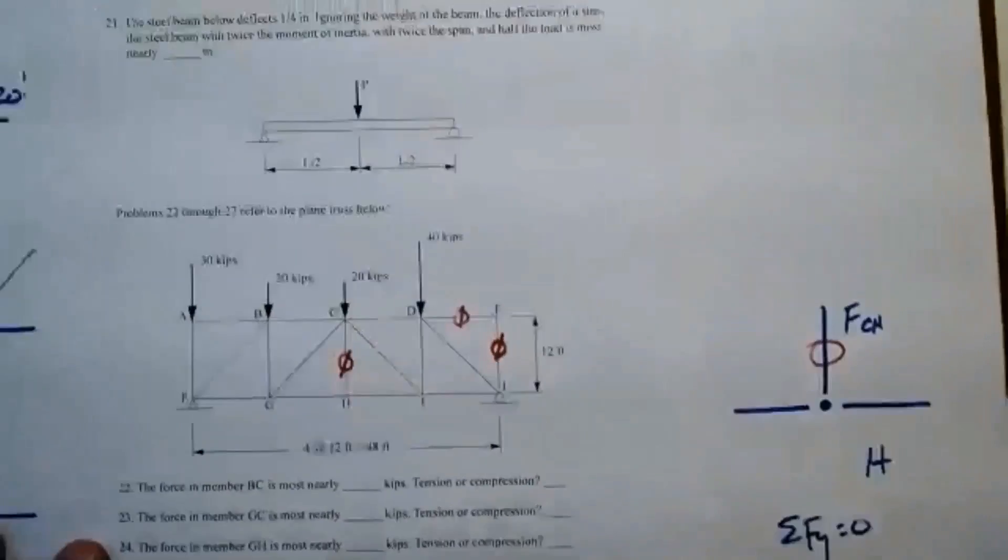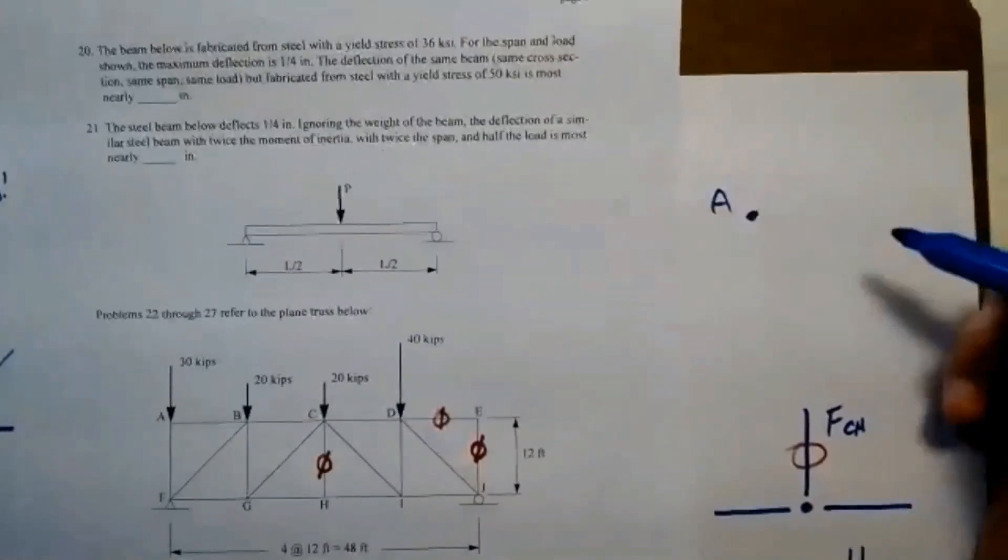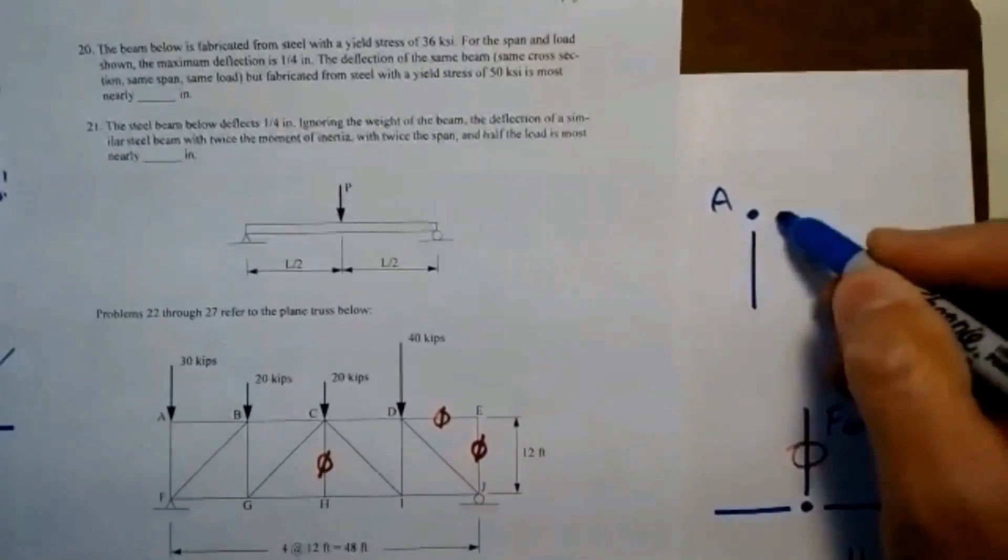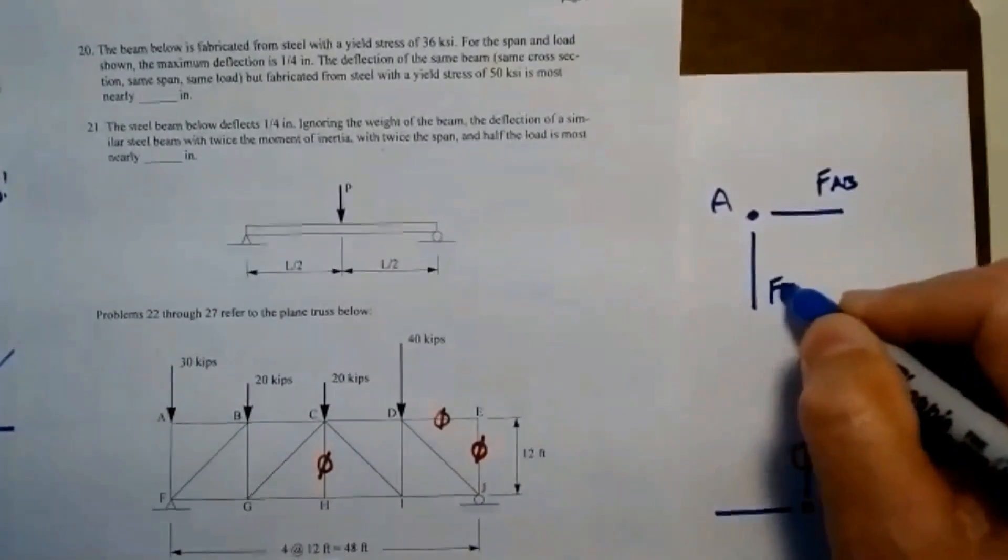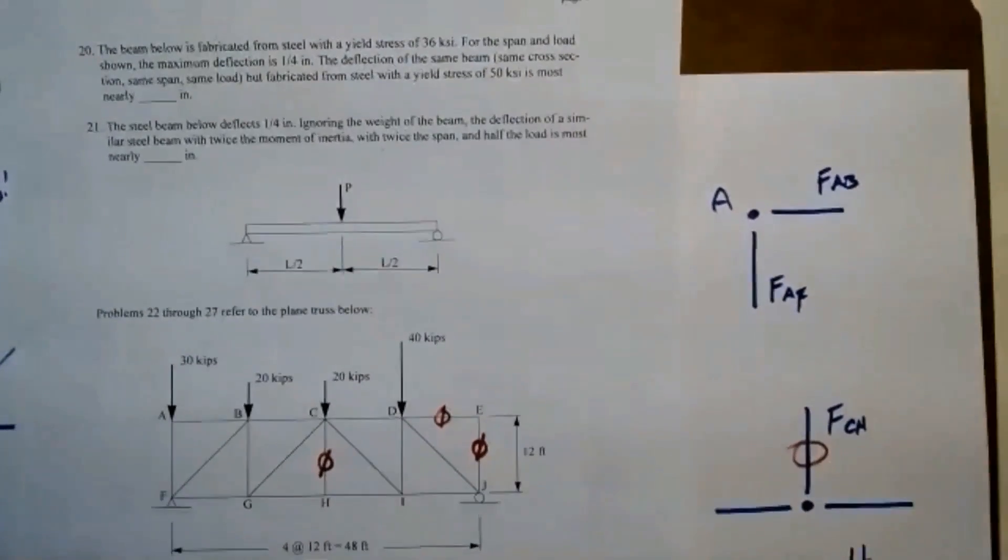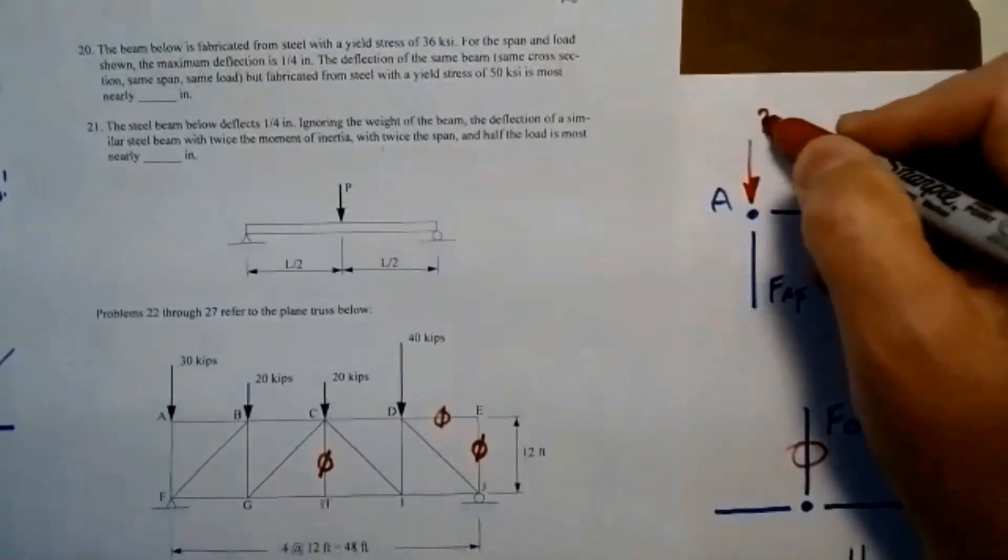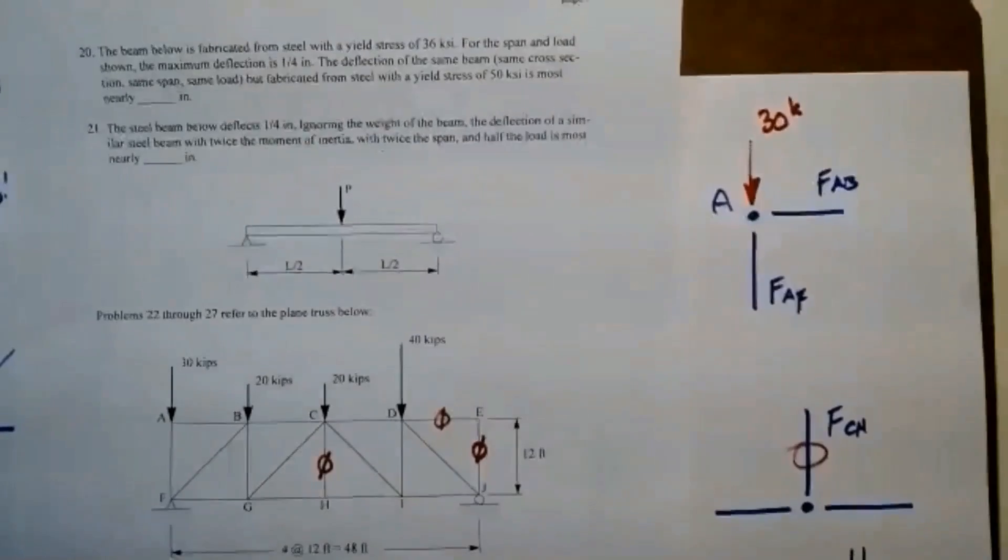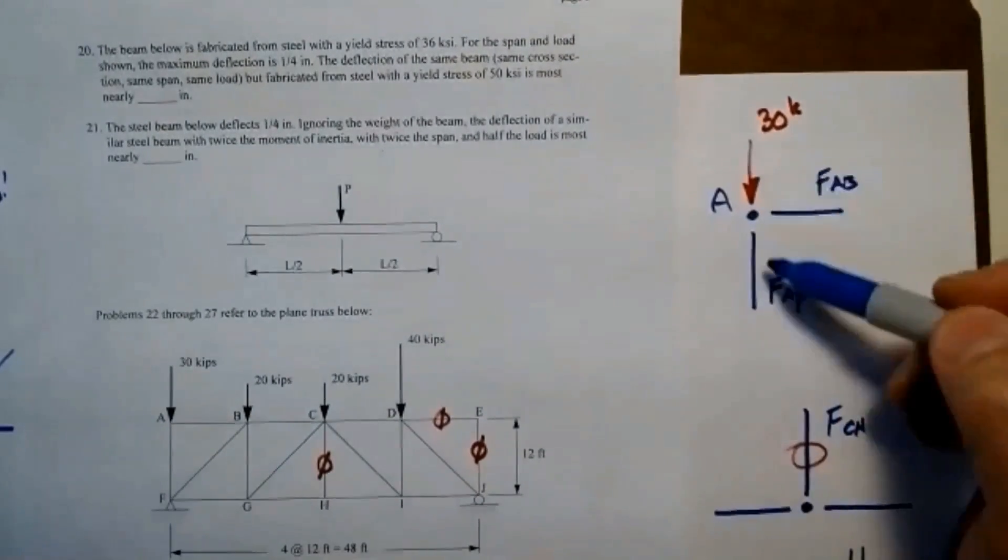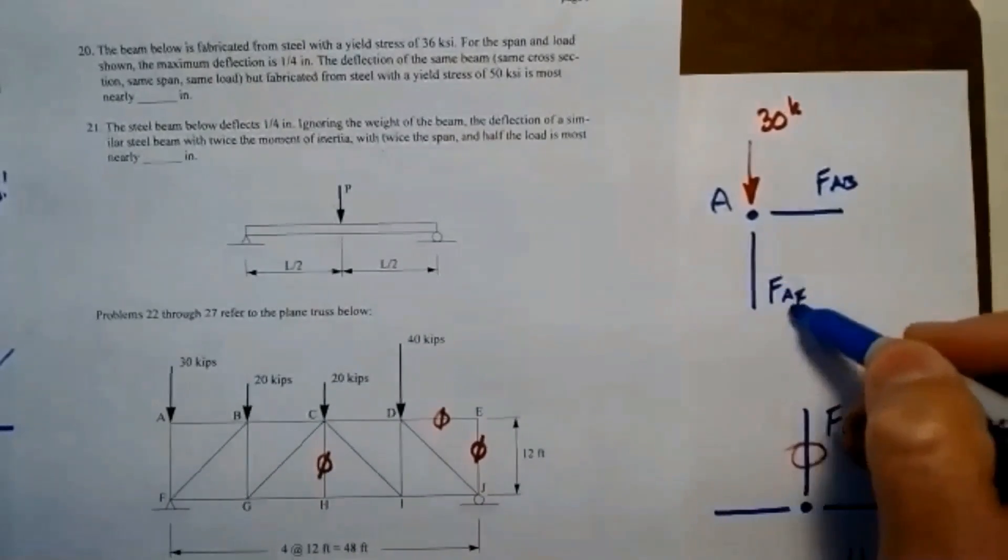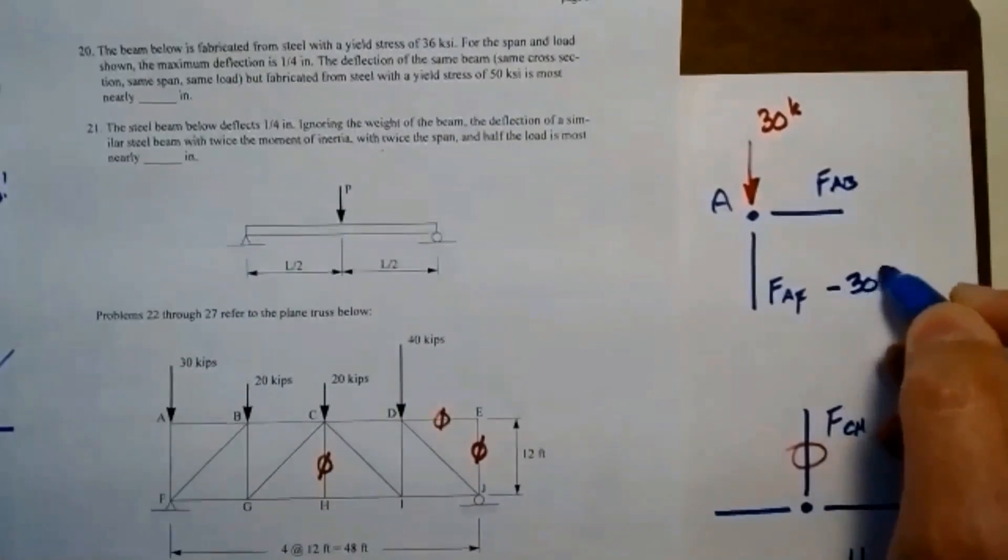Now with the same logic, let's look over here at joint A. I've got force AB and force AF. I do have an applied load. If I sum forces in the vertical in the Y direction, I know that FAF is going to equal minus 30 kips.